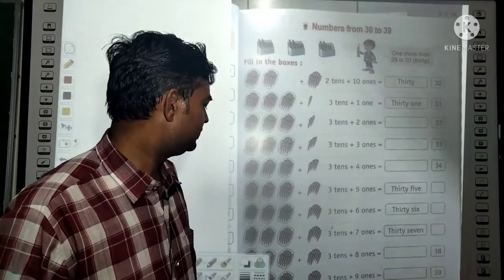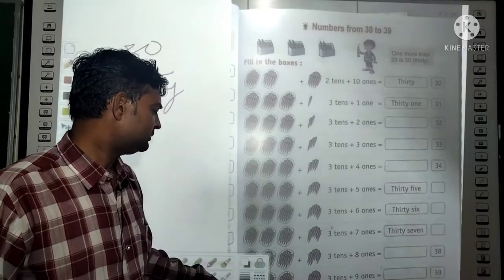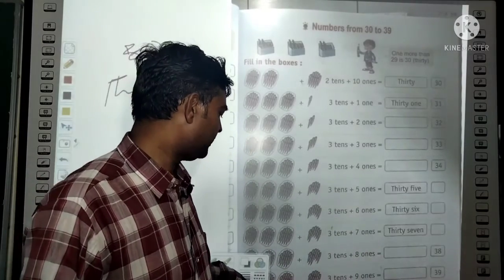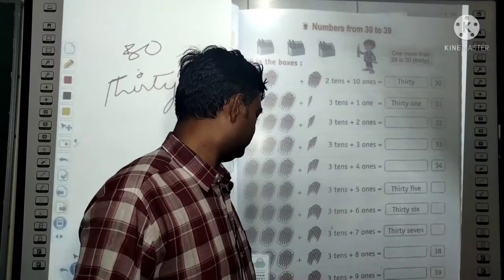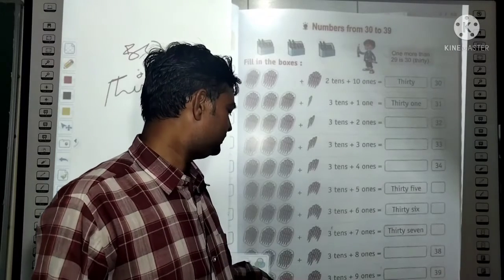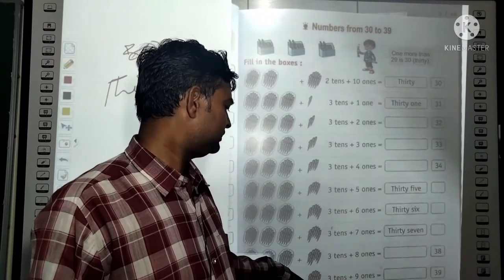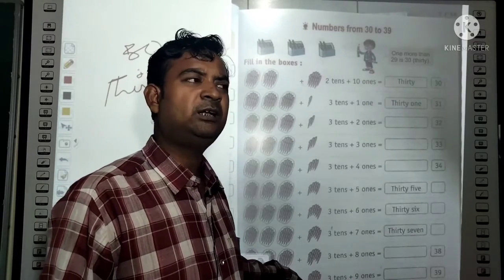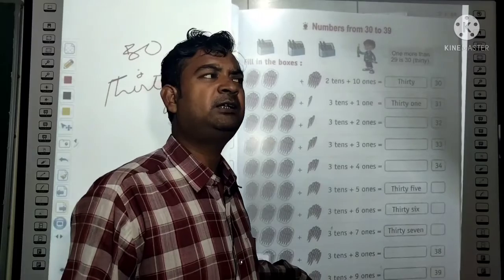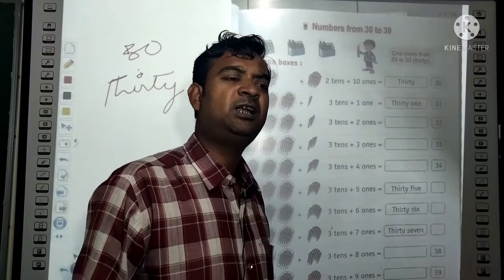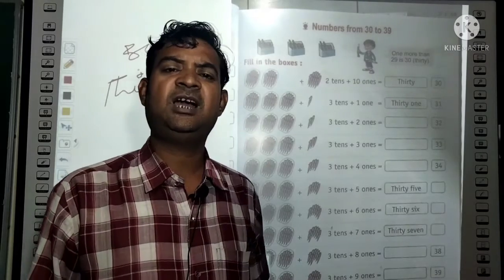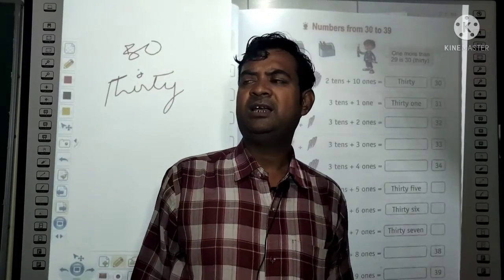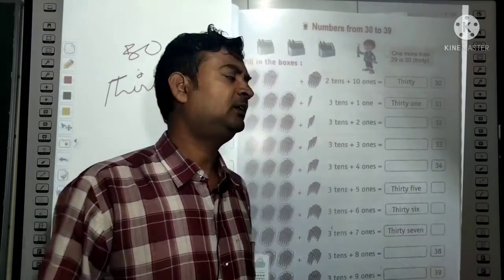In this way, you will do all of them. Last point: 3 tens + 9 ones equals 39. Spelling of 39: T-H-I-R-T-Y N-I-N-E.